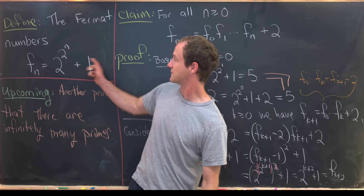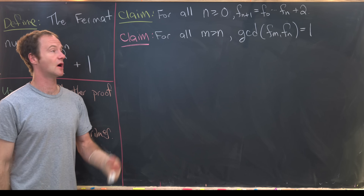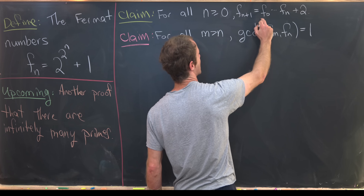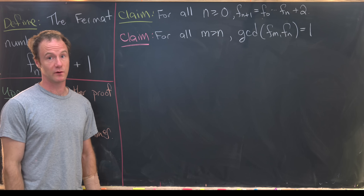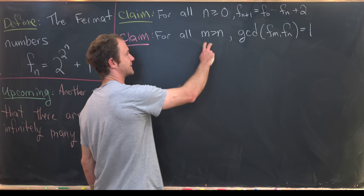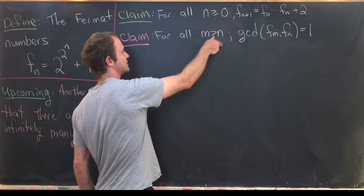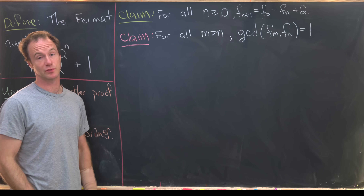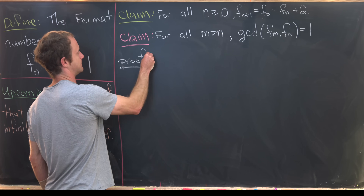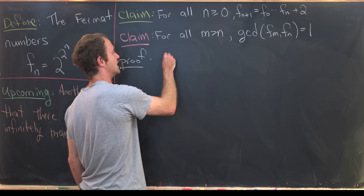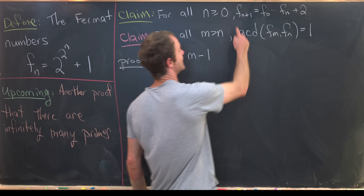Now we'll use this multiplicative recursion — F sub n plus 1 equals the product F0 through Fn, plus 2 — to show that any two distinct Fermat numbers are relatively prime. That is, for all m greater than n, the gcd of F sub m and F sub n equals 1. Taking m greater than n is for convenience; what really matters is m not equal to n.